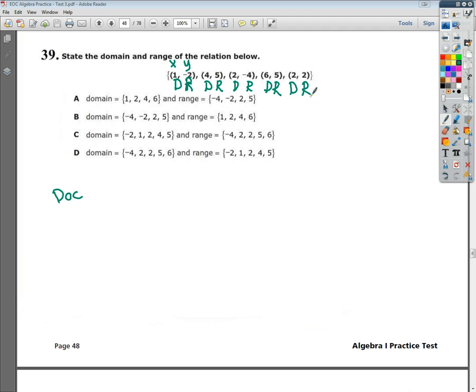Essentially, anything in that first set would be my domain. I want to put them in numeric order. So I'm going to have 1 and then 2. You don't write them twice, you only write them once. It will help later make a decision about whether or not this is a function.